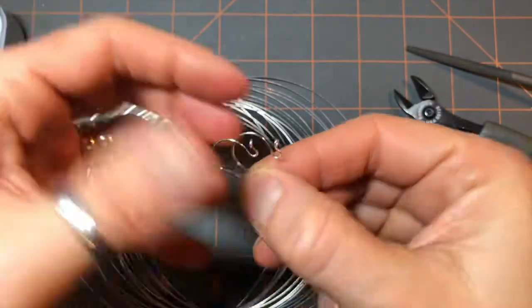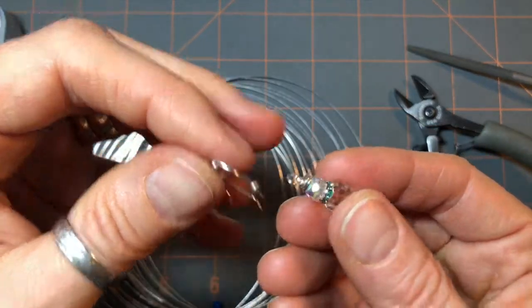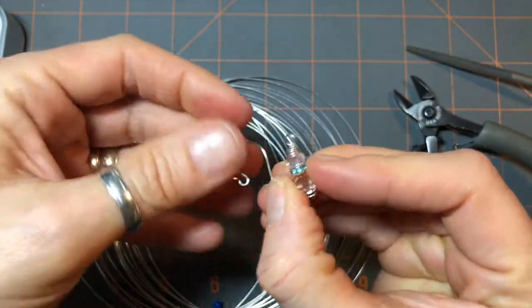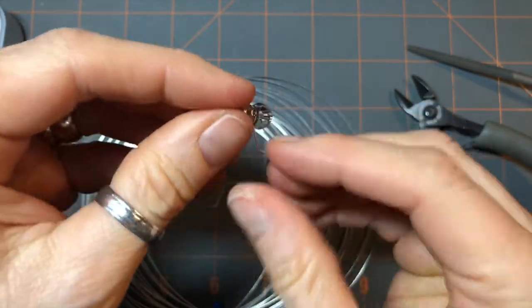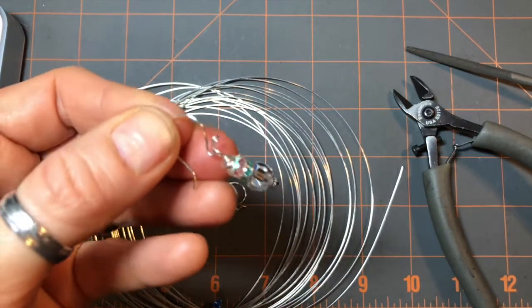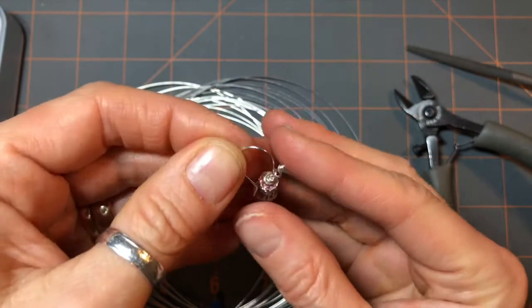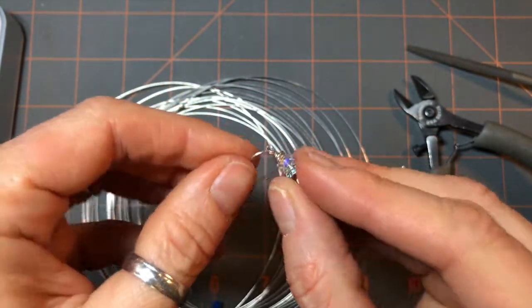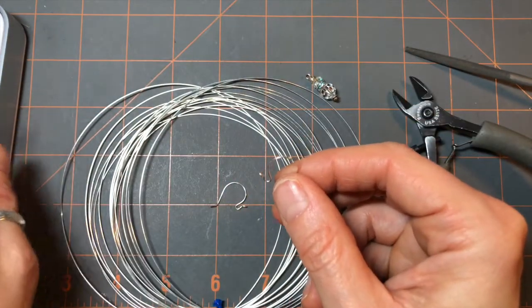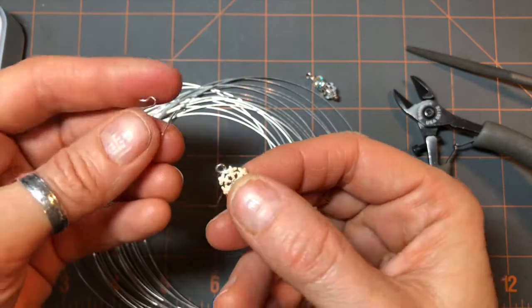And there we are. An awesome pair of interchangeable earrings. Now you can make yourself a bunch of dangles and all you have to do is slip them on. There you go. You get a pair of those earring stoppers and at the end of the night you just slip them off.